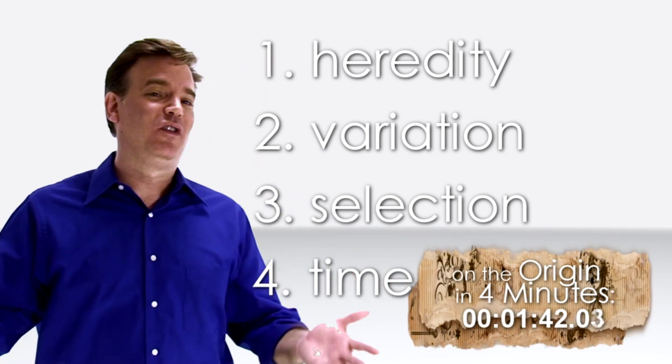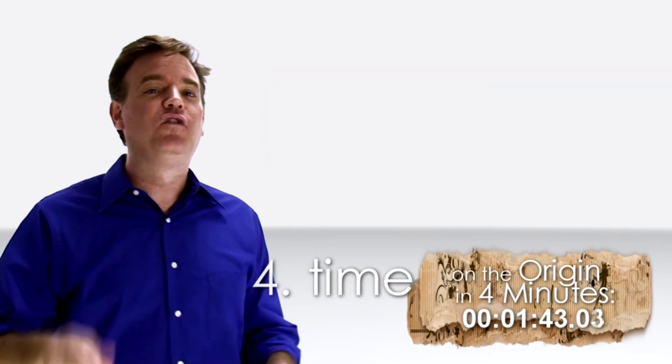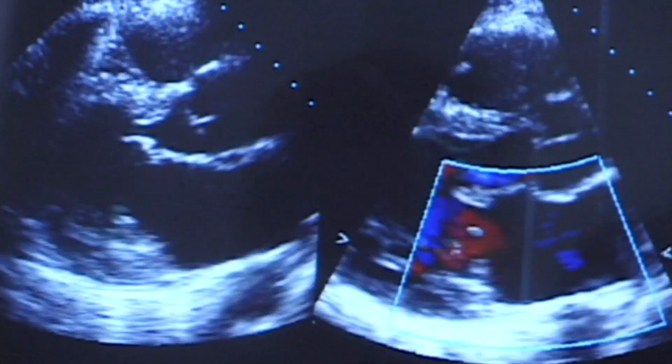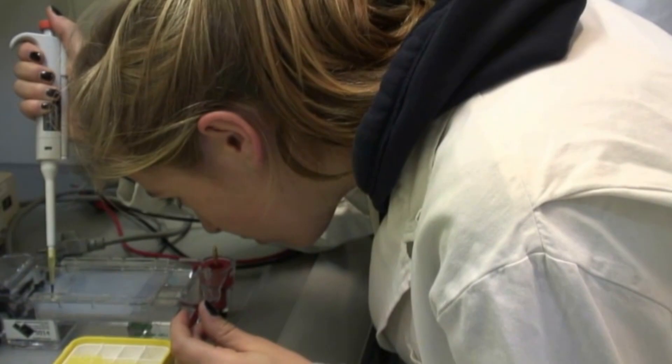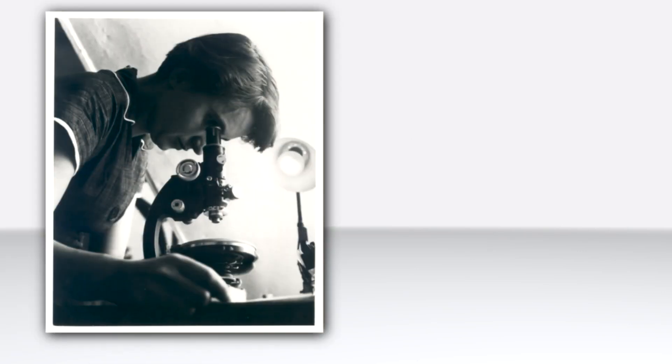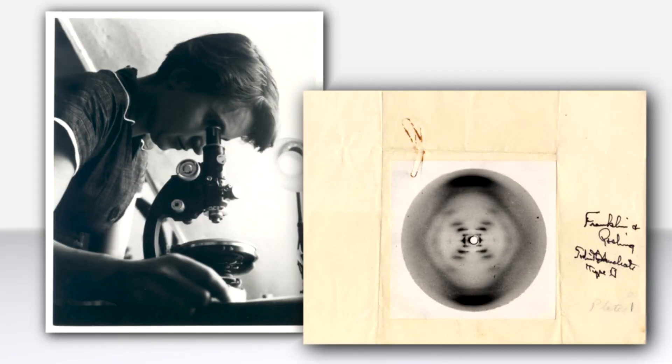And that is Darwin's theory of evolution in four words. We still have a little bit of extra time, which is great, because there's been more than 150 years of science since Darwin's day. For example, Darwin makes some bold predictions about heredity without understanding what makes it work. It wasn't until Rosalind Franklin took a picture of the DNA molecule in 1953 that we finally had proof that Darwin was right.